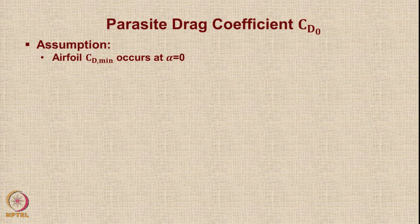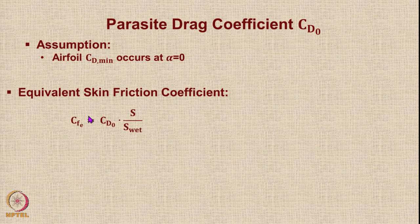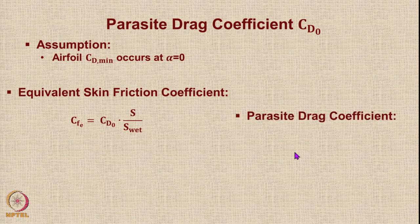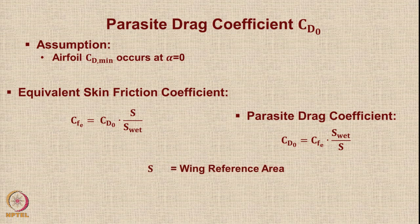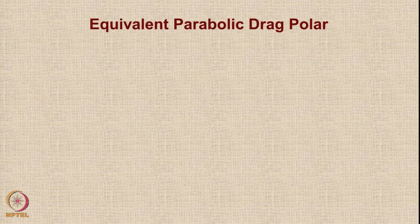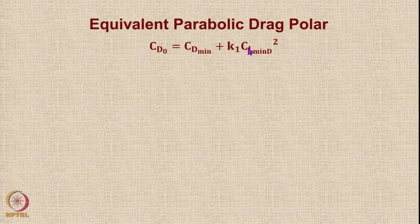To determine CL at minimum drag, we make some assumptions. We assume minimum drag occurs at alpha equal to zero for the airfoil. The equivalent skin friction coefficient is CFe = CD0 · S/Swet, and the parasite drag coefficient is CD0 = CFe · Swet/S, where S is wing reference area and Swet is aircraft wetted area. We will now see how to get the equivalent parabolic drag polar, where CD0 = CDmin + K1·CLmin_drag².